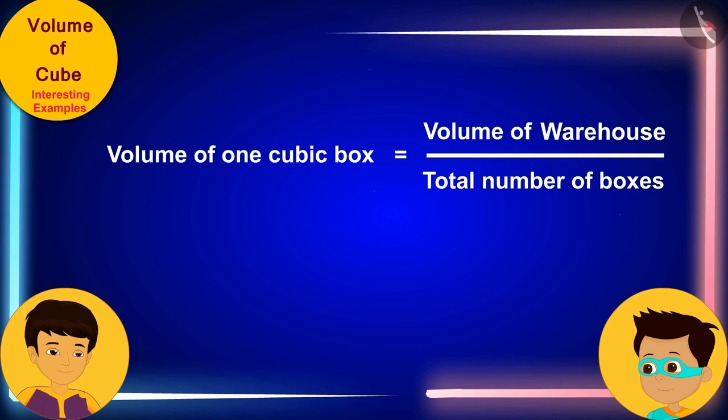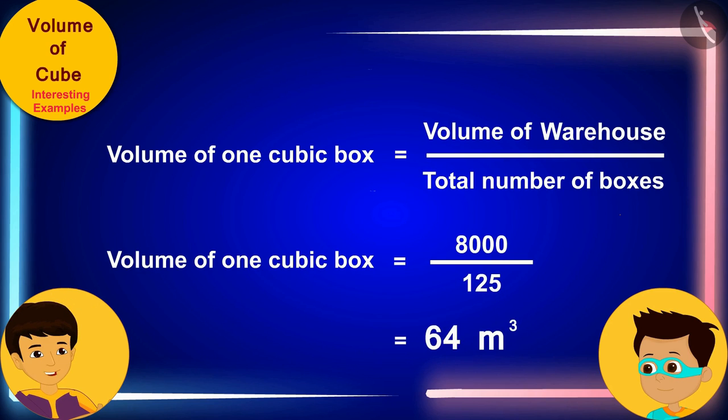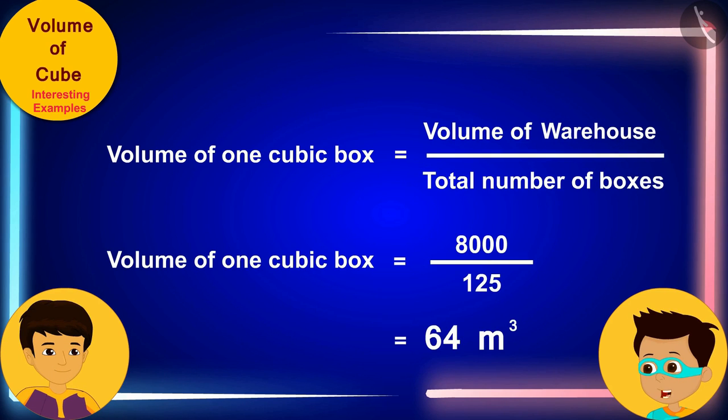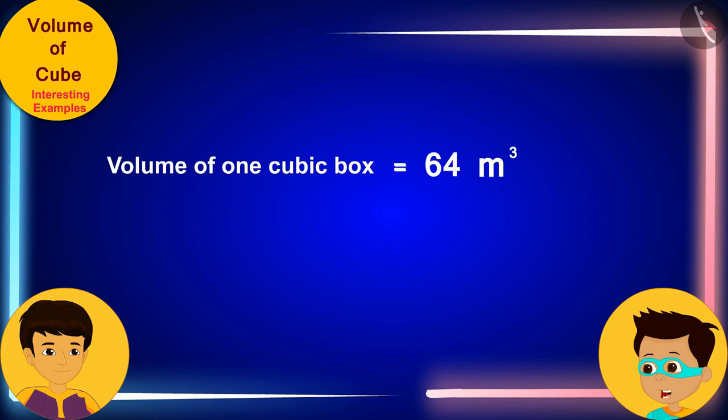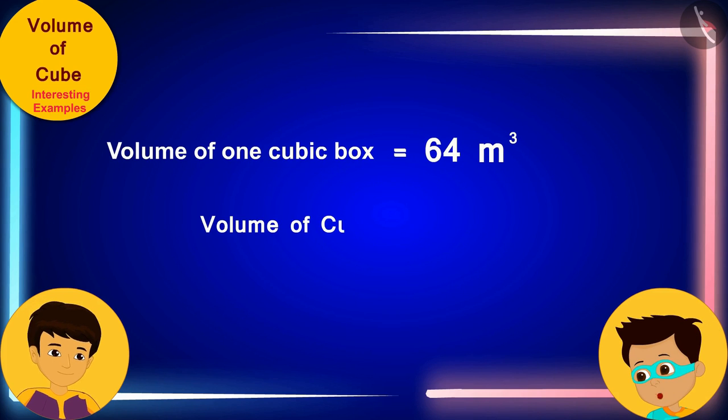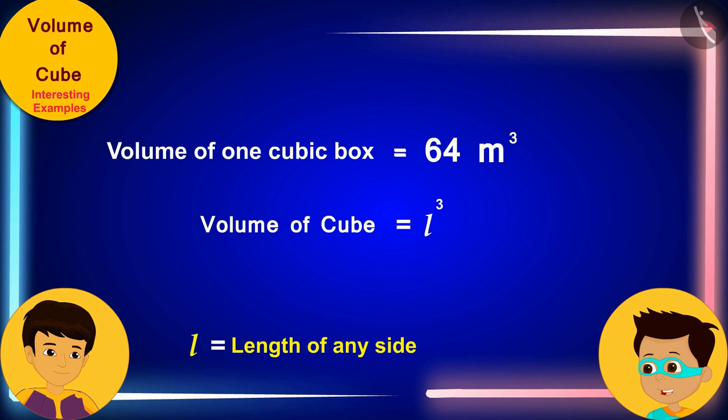In this way, the volume of a box is 8000 divided by 125, that is 64 cubic meters. Wow! Now it has become very easy. We know the volume of a cubic box and we also know that the volume of a cube is equal to L cube, where L is length of any side of the cube.